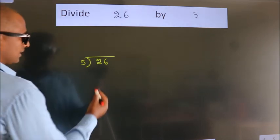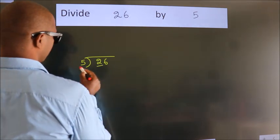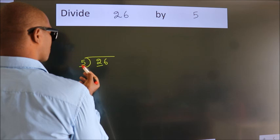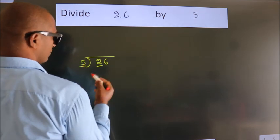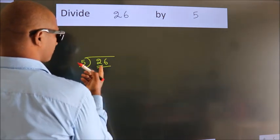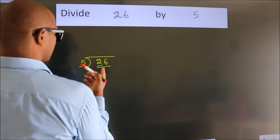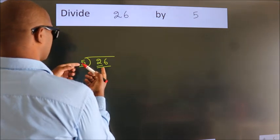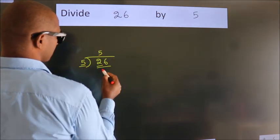Next, we have 2 here, 5 here. 2 is smaller than 5, so we should take two numbers: 26. A number close to 26 in the 5 table is 5 fives, which is 25.